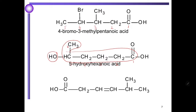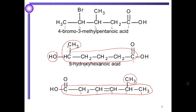Then we look at structure number three. We look for the longest chain: one, two, three, four, five, six. We have methyl as substituent at carbon number five. We have a carbon-carbon double bond at carbon number two. So the name for structure number three will become 5-methyl-3-hexenoic acid.